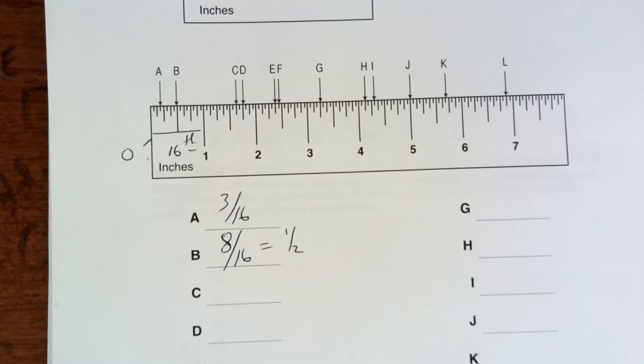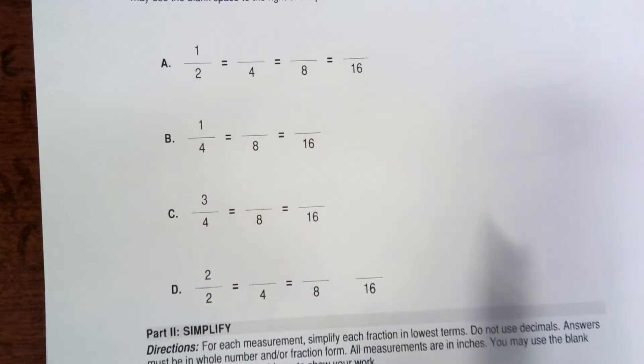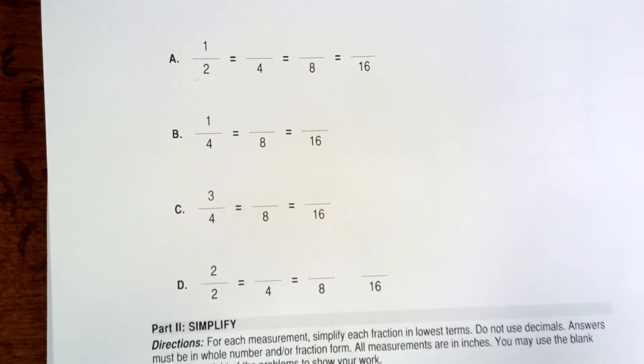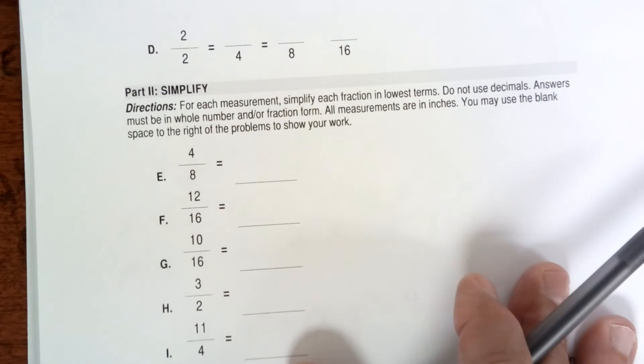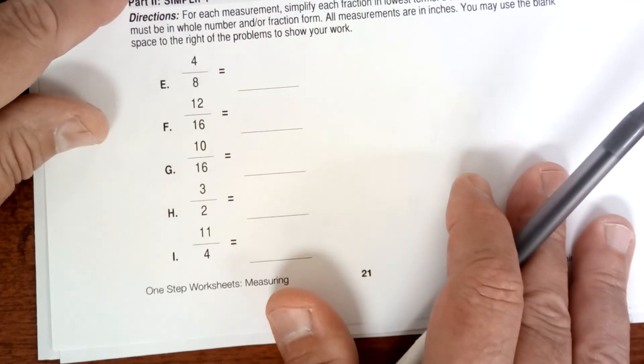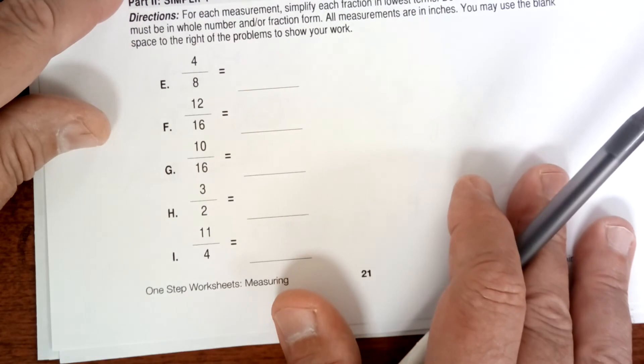If you look at point B, it looks like eight sixteenths, but eight sixteenths reduces to one half because eight goes into sixteen two times. That's what we're doing today — using a ruler. I hope you understood that. Then we're going to multiply by two to get four, and I'm going to have you use a real ruler and measure some things around the classroom. Have a good morning.